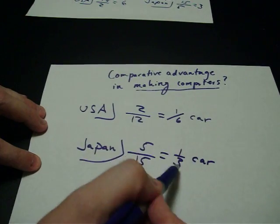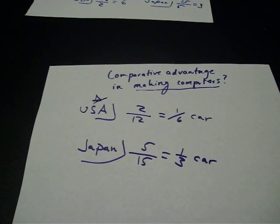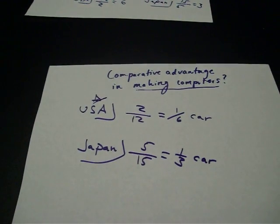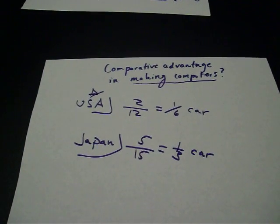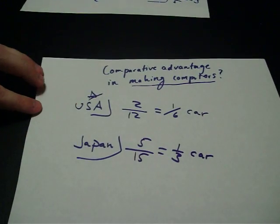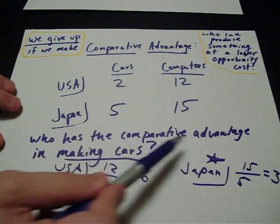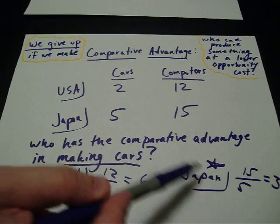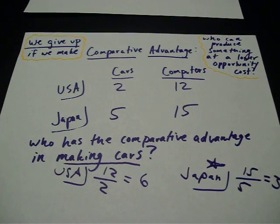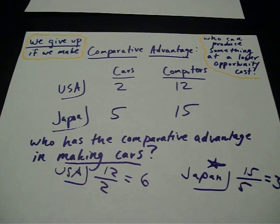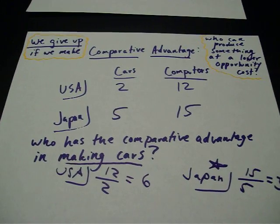In this case, since 1/6 is less than 1/3, the United States has the comparative advantage in making computers. David Ricardo came up with the idea that whoever has a comparative advantage could make a trade for that product — a trade that would benefit both countries.